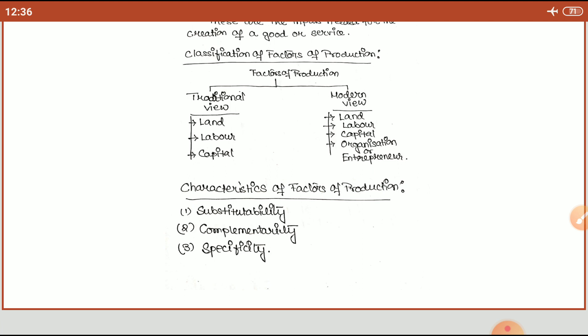For example, A and B are factors of production in a company, and suppose A and B are substitute products. Then whenever we need, we can substitute A by B. That is the characteristic of substitutability.